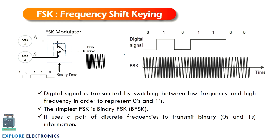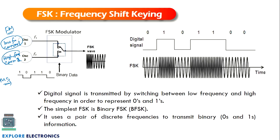Let us understand frequency shift keying, or FSK. Compared to frequency modulation in analog communication, FSK is the digital modulation method. The message signal is again binary data. Here we consider two carrier waves: one low-frequency carrier wave and one high-frequency carrier wave. There are two oscillators — one generating a low-frequency carrier and another generating a high-frequency carrier.